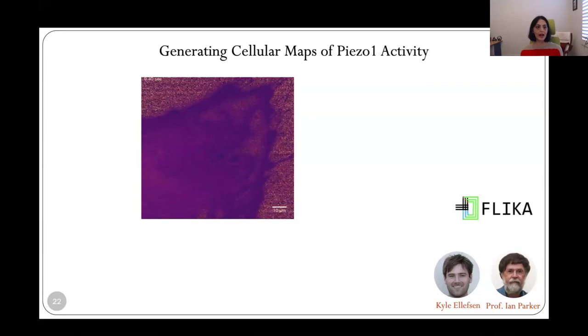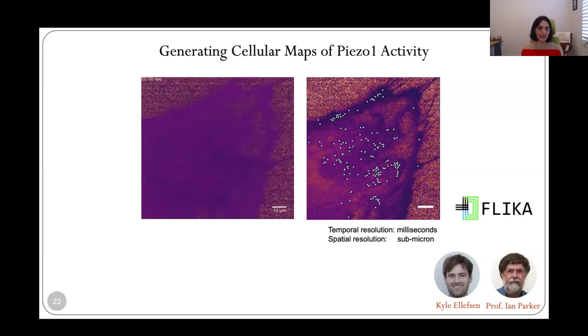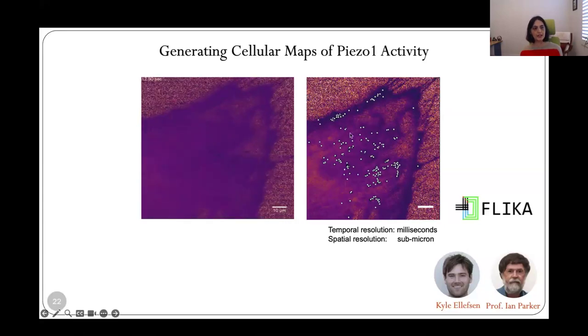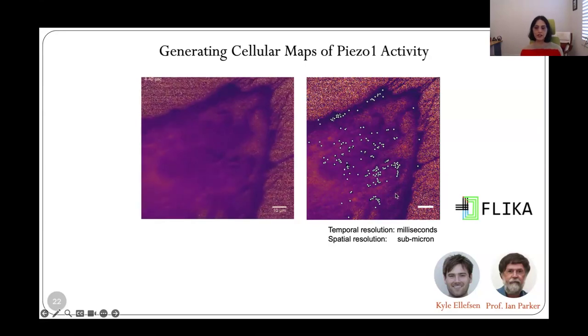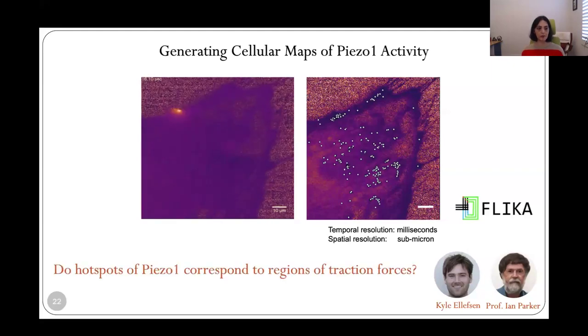To examine this more carefully, we collaborated with Ian Parker's lab to develop a super-resolution analysis algorithm that allowed us to take movies such as the one I just showed you and to build a map of active Piezo1 channels which identifies the source of the signals, that is the active channel, with sub-pixel precision. And so now wherever you saw flashes of light in the movie, you see a white dot. And when we looked at this, we saw that the channel activity didn't seem to be distributed all over the cell. Instead, it occurred in hotspots.